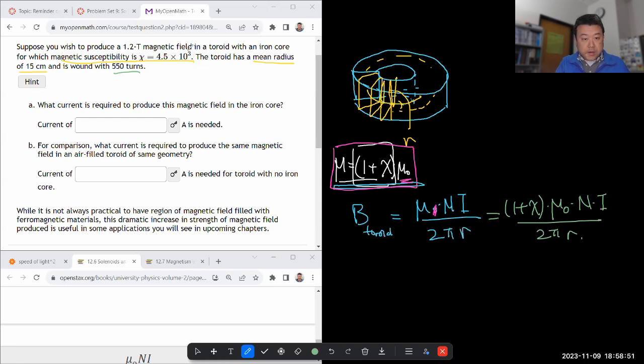So what current is required? So I have to solve this for current. Let's do that. I'm going to do the algebra in my head. It just moves everything over reciprocally. So current is 2 pi r times the magnetic field inside the toroid divided by 1 plus chi times mu naught times n.